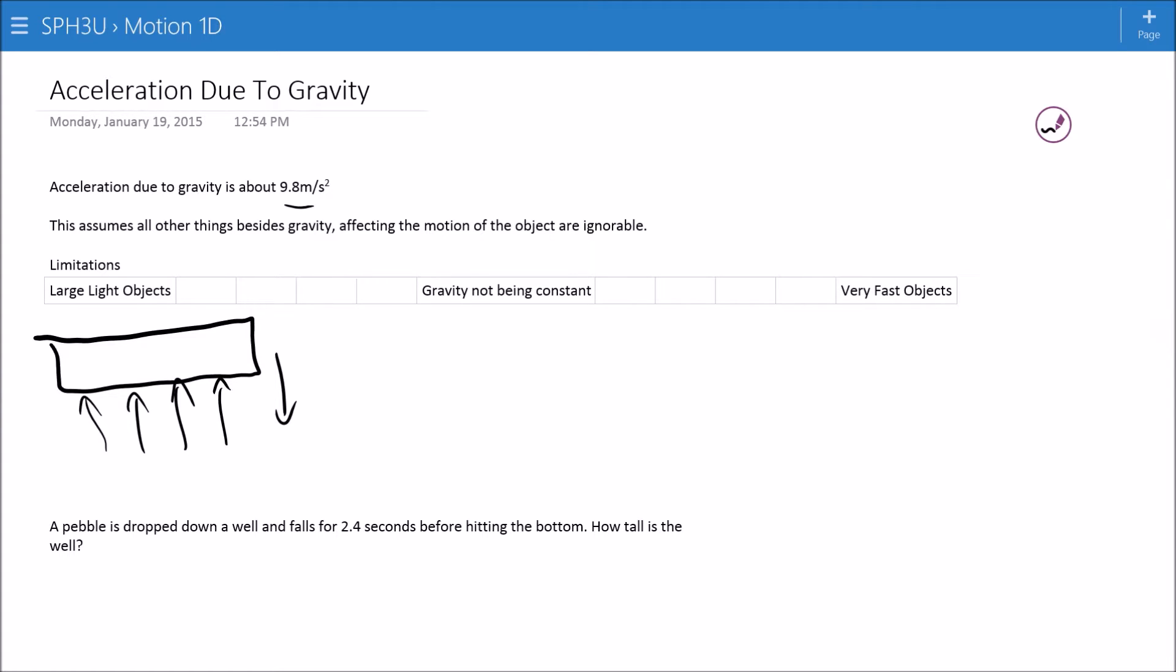Gravity not being constant, like I said, the Earth is a little fatter than it is long, so the gravity up here on the North Pole is going to be a little bit larger than it is to somebody down here at the equator. So they're going to have a little less gravity down here.